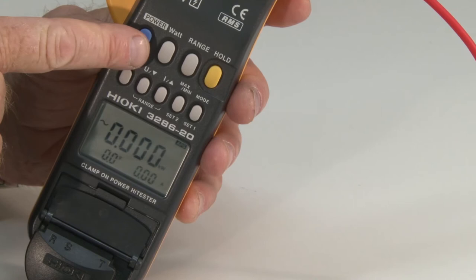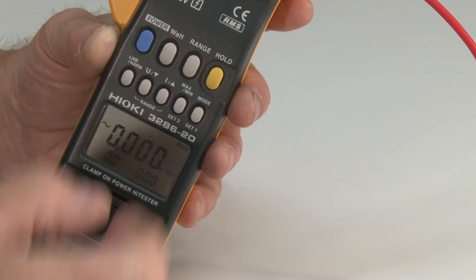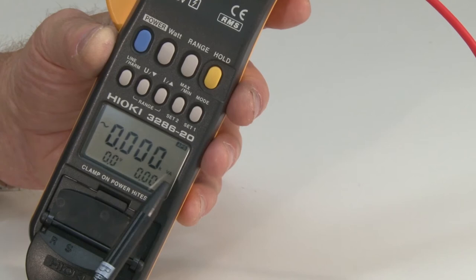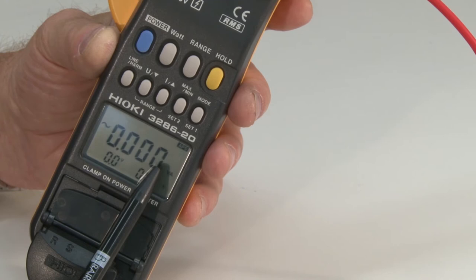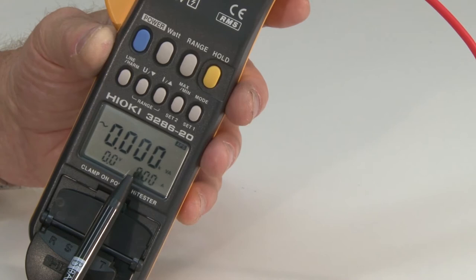If we go to this little button here, which says watts, and we press this once, you'll notice now that we're actually measuring not watts, but apparent power. If you look at the unit over here, this is VA or volt amps.